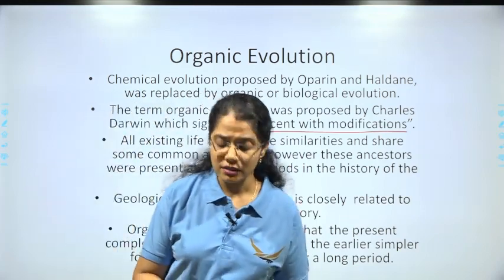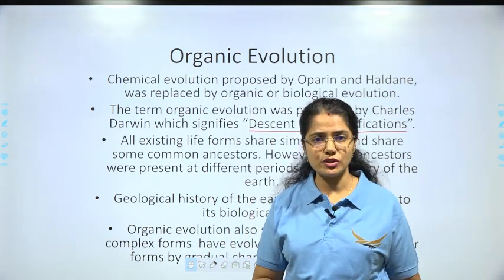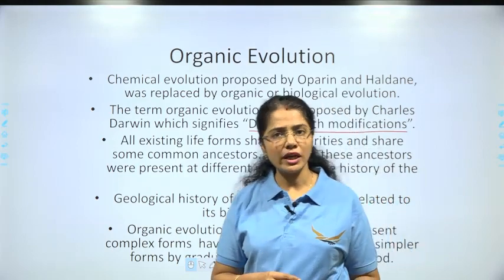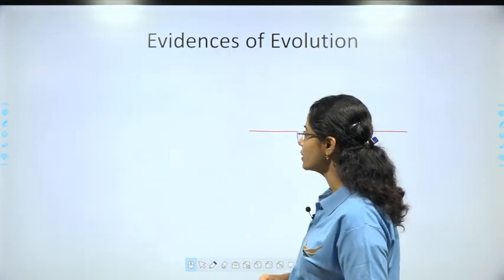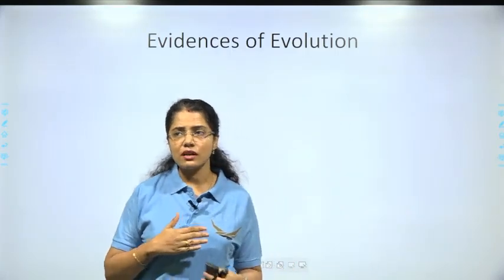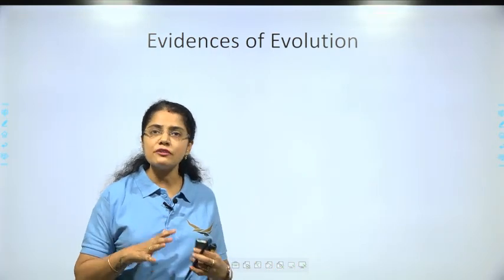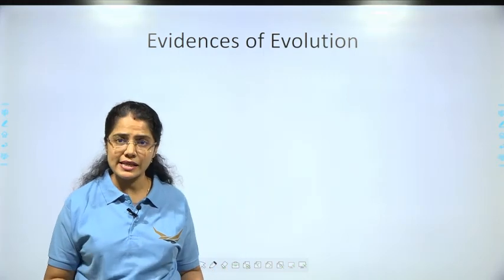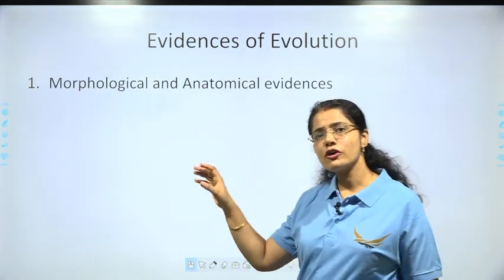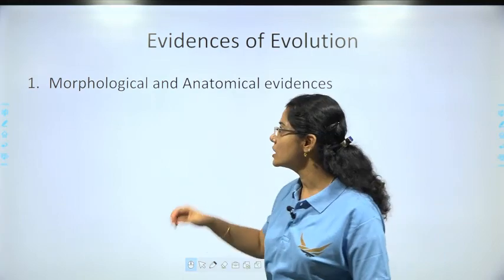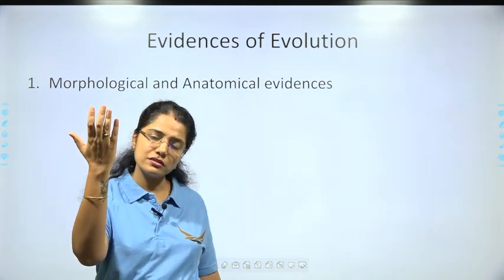And hence, there are evidences which help us understand this gradual process of evolution. The evidences available can be put into five categories. The first is morphological and anatomical evidence, which tells us about the external and internal structures of life forms that existed in history — allowing us to compare their structural features with modern forms.